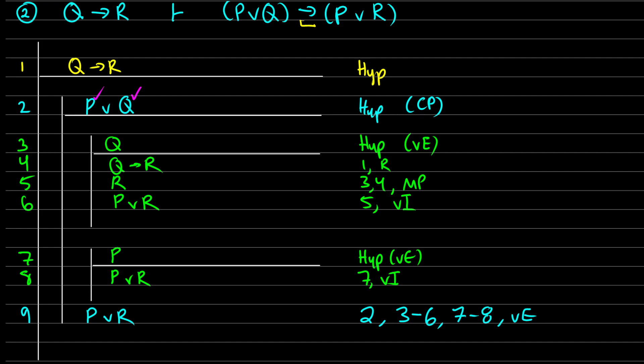So at this point, we can do a conditional proof. So remember, we assumed P or Q for the conditional. What happens if we have P or Q? And we've shown now that our final result that we get is P or R.